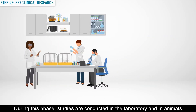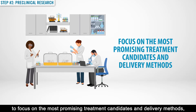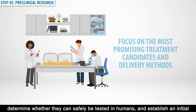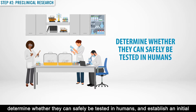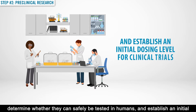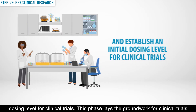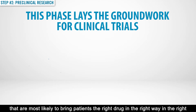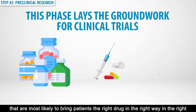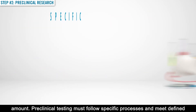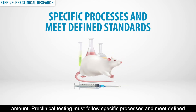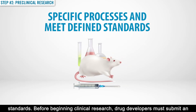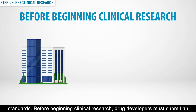Step number two: Pre-clinical Research. During this phase, studies are conducted in the laboratory and in animals to focus on the most promising treatment candidates and delivery methods, determine whether they can safely be tested in humans, and establish an initial dosing level for clinical trials. This phase lays the groundwork for clinical trials that are most likely to bring patients the right drug, in the right way, in the right amount. Pre-clinical testing must follow specific processes and meet defined standards.